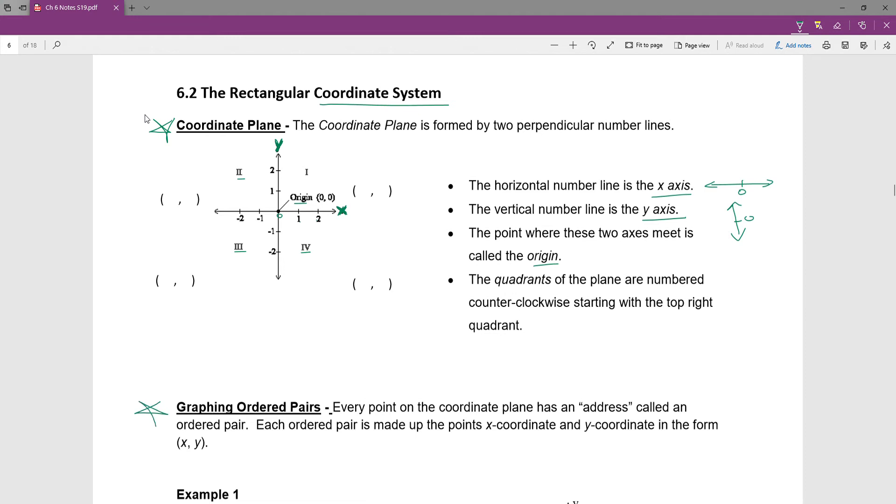So down here, graphing ordered pairs, every point on the graph or on the coordinate plane has an address. It's a location. And that's given by or called an ordered pair. An ordered pair is always made up of the x location and then the y location. And it's always in the form, in brackets, and the brackets don't mean anything, x, y.